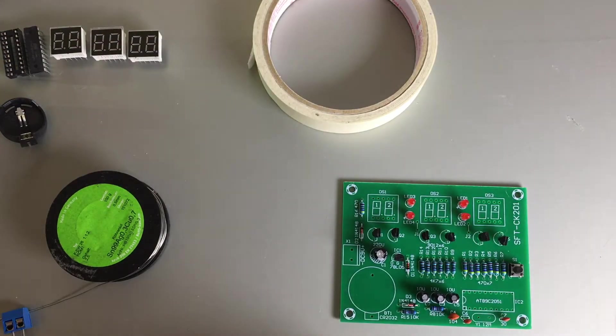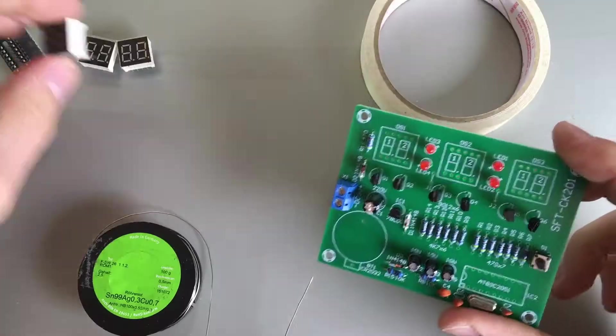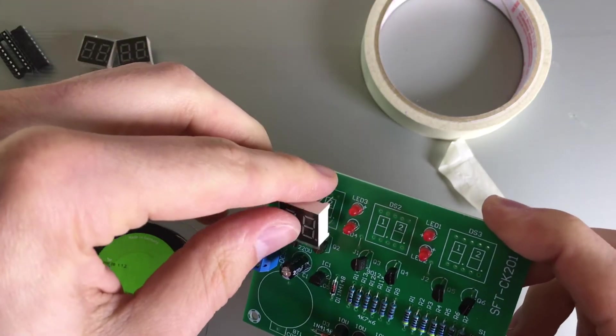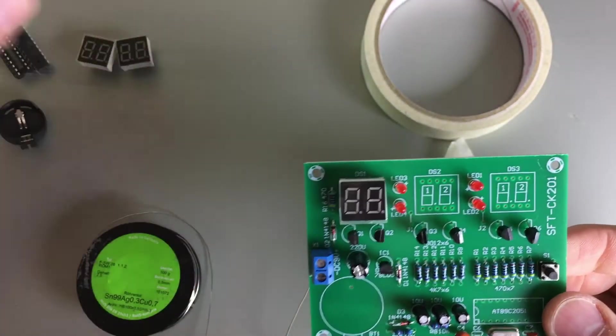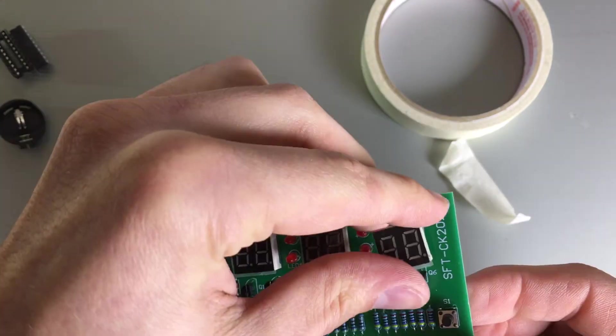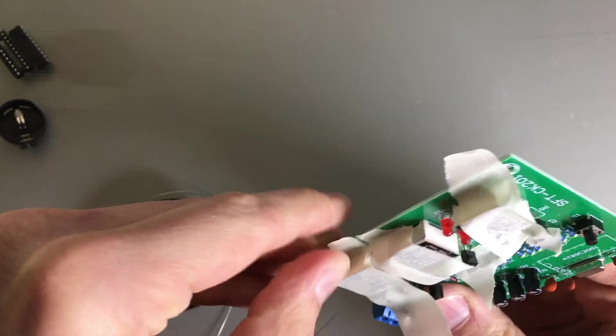Now it's time to add the bed for the IC, the other components like power adapter and battery holder, quartz and of course the display units. To prevent these short-legged components from falling off the board, I fixated them to the board temporarily using some tape.